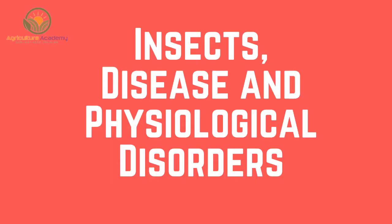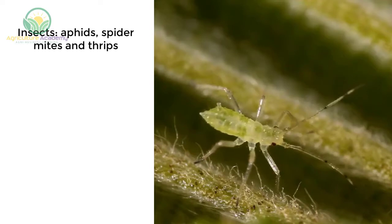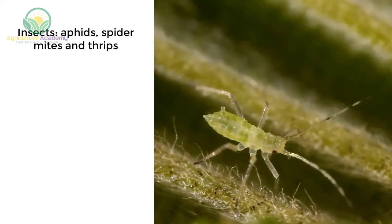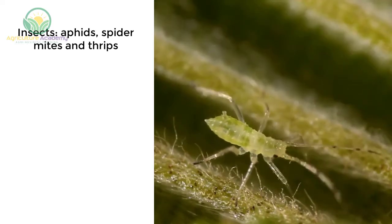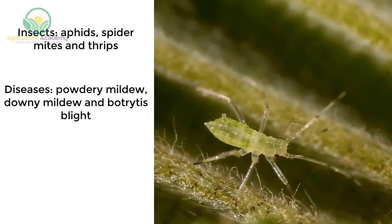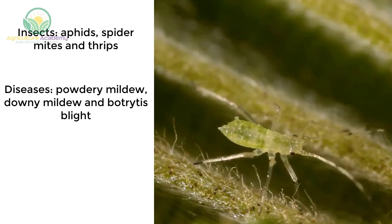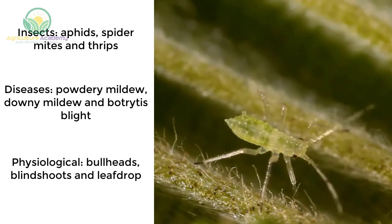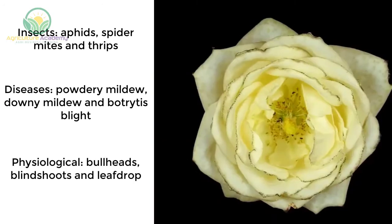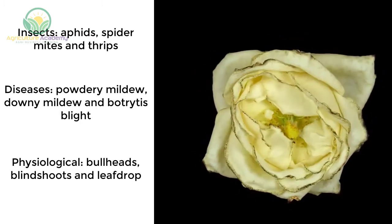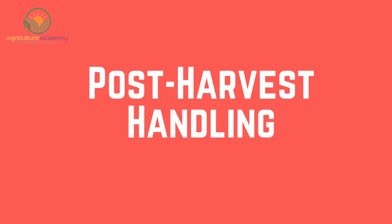Insects, Disease and Physiological Disorders. Infestations of spider mites, aphids, and thrips are common. Powdery mildew, downy mildew, and botrytis blight are regular problems. Physiological problems include bullheads, blind shoots, and leaf drop.